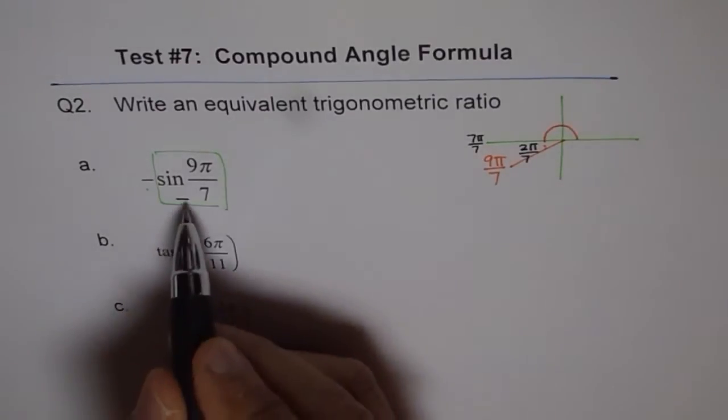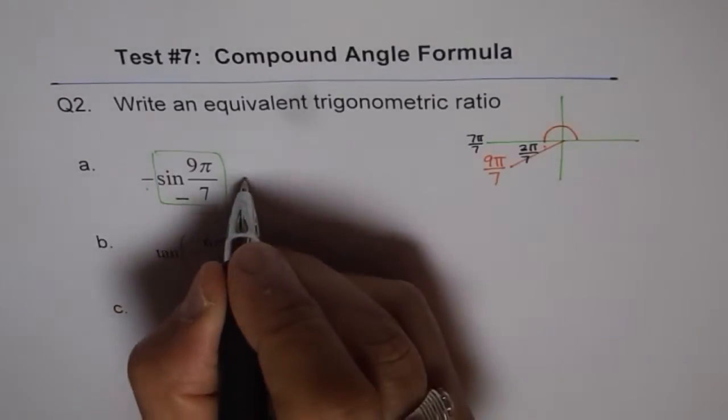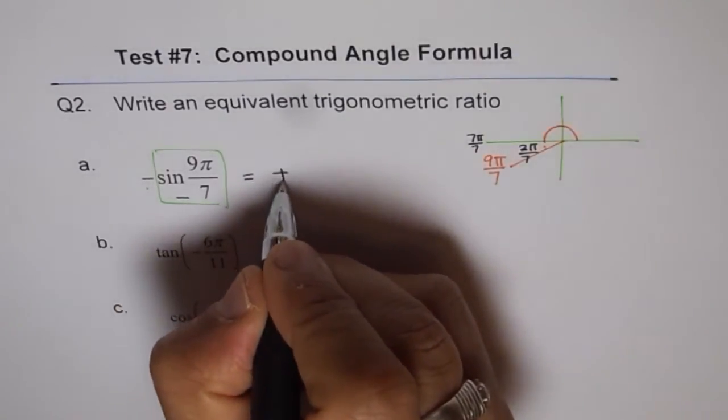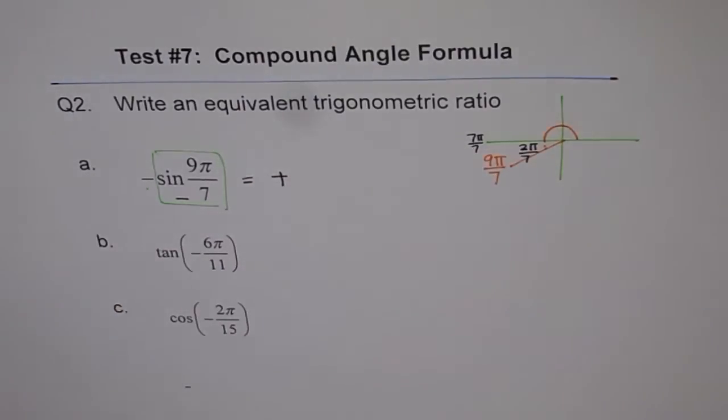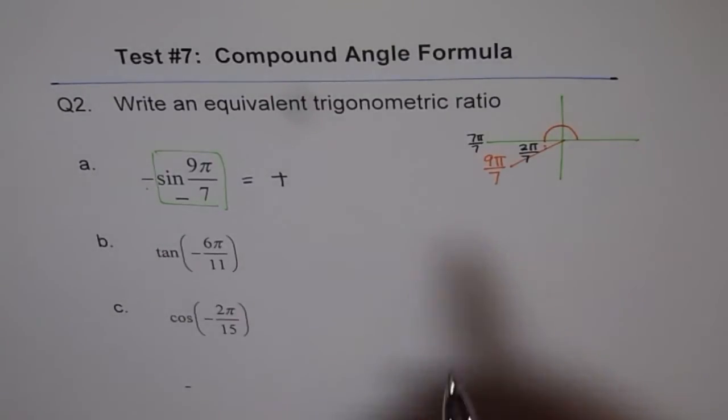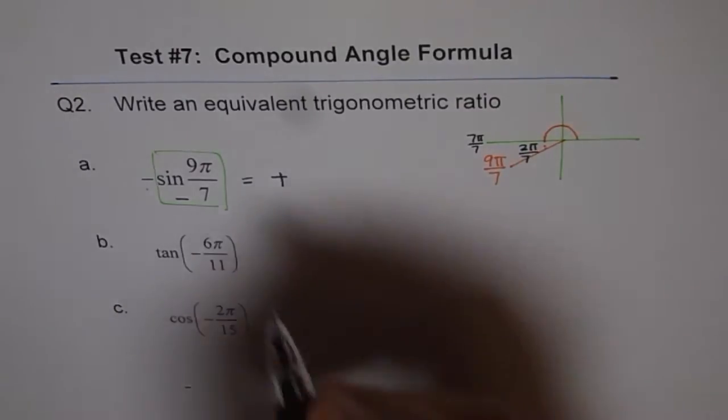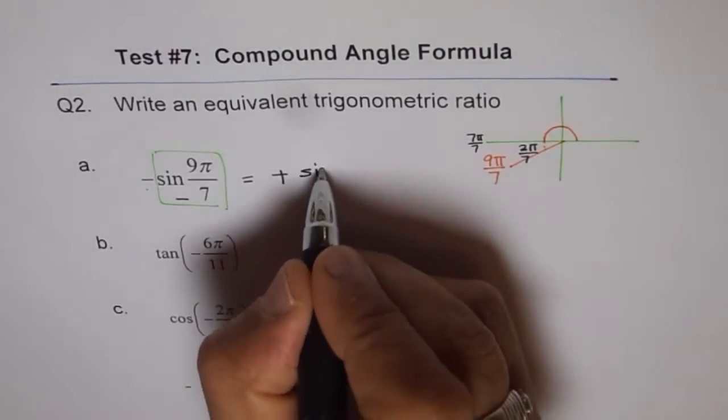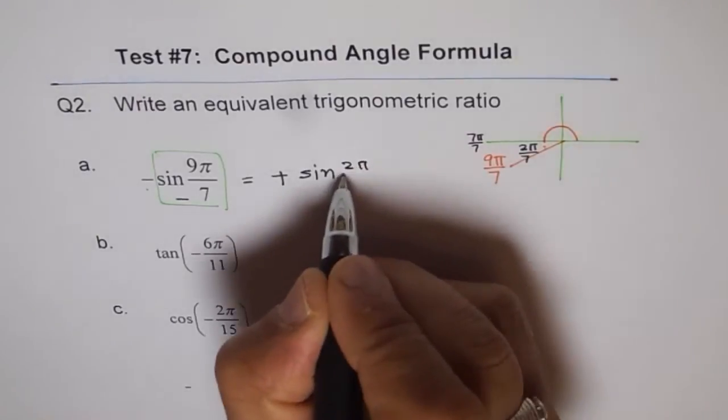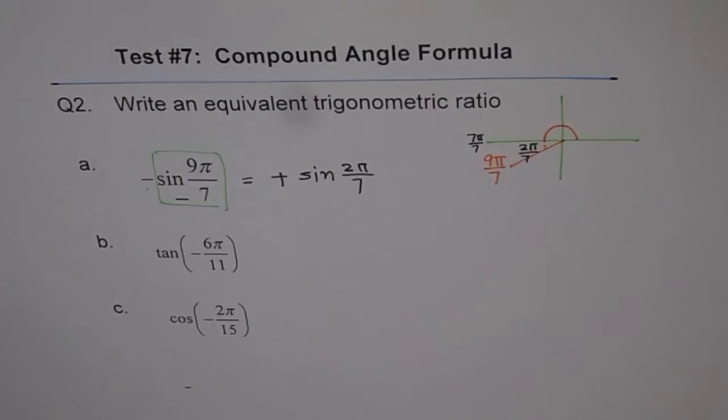Because you are in quadrant 3, negative and negative should make it positive. So you expect a positive value. That is how we get the sine. And we have to get the angle. Angle is a related acute angle 2π by 7. So we can write this as sine of 2π by 7. That is how we can write it as an equivalent trigonometric ratio.